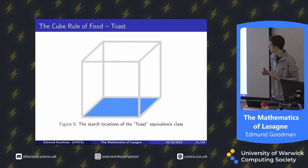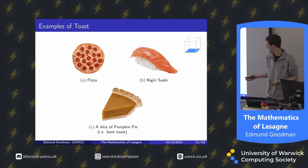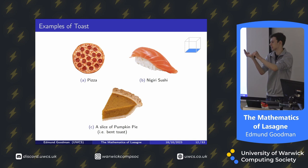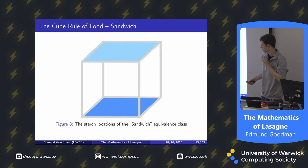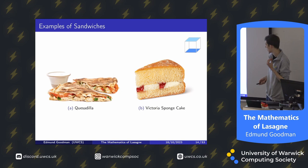Let's go into some examples. First, toast — starch just at the bottom. The toast equivalence class includes pizza, nigiri sushi, and a slice of pumpkin pie, because if you flatten out a slice of pumpkin pie it is just starch at the bottom. Next, sandwiches — starch at the top and the bottom. Examples include a quesadilla and Victoria sponge cake, which are both sandwiches. Hot dogs in fact aren't sandwiches because they wrap around rather than sitting at top and bottom.